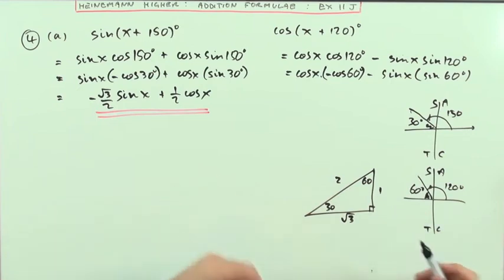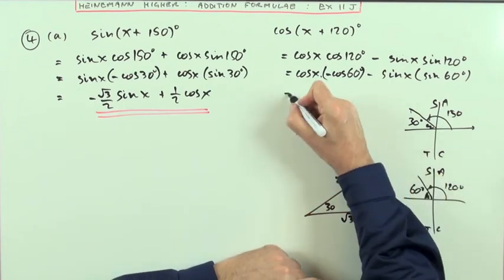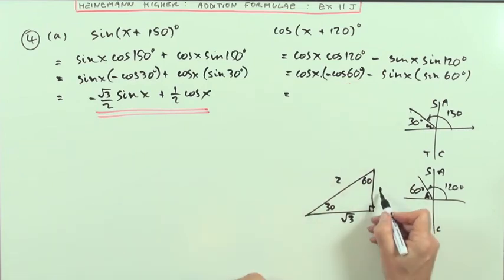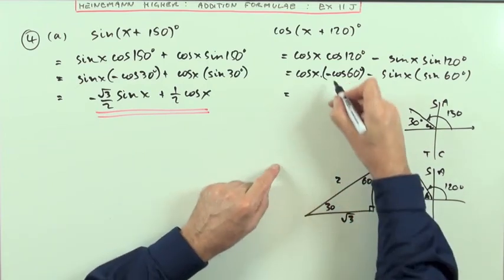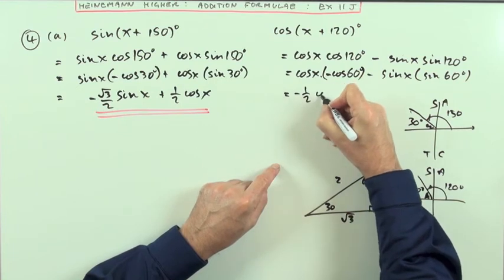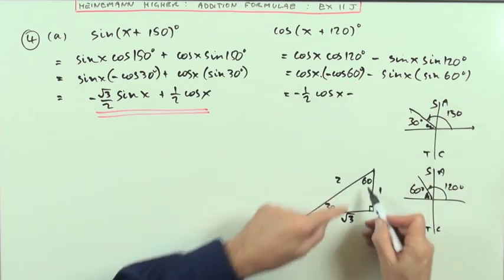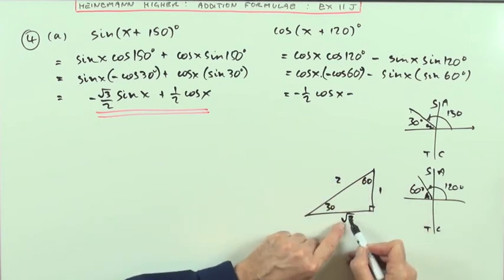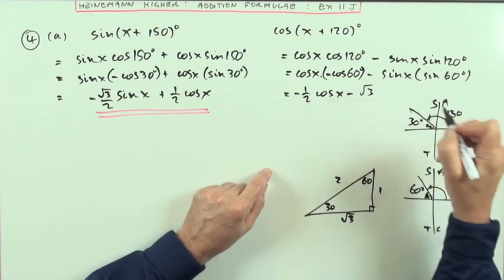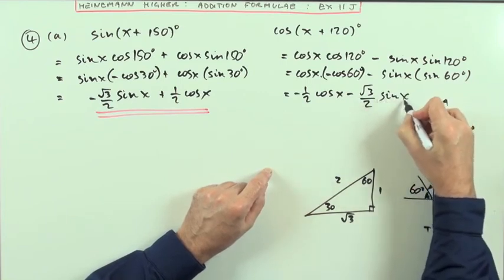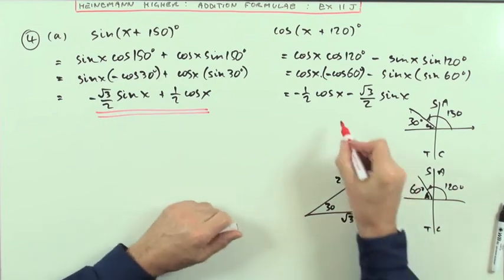Same in this one. Cos 60° means adjacent, that's the 1. So that's -1/2 cos x minus sin 60°, which means opposite 60°, that's √3. √3/2 minus √3/2 sin x. Those would be the expansions.